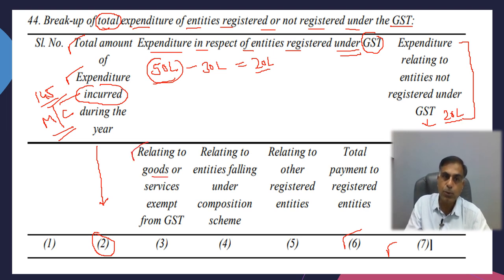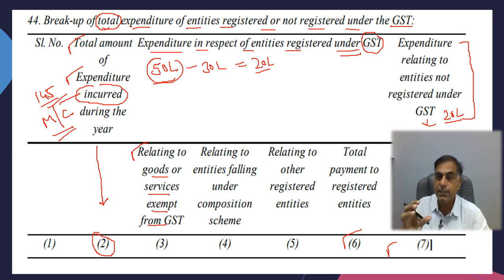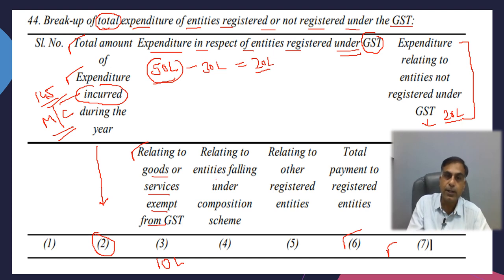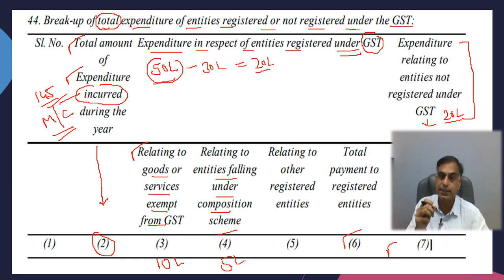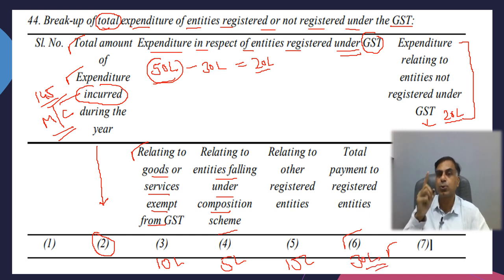The Column 6 bifurcation is: first, expenditure relating to goods or services exempt from GST — say for example Rs. 10 lakh procured from those having a GST number but supplying goods or services exempt from GST. Second, relating to entities under the composition scheme — say Rs. 5 lakh incurred on those having a composition scheme GST number. Third, the remaining Rs. 15 lakh incurred on entities having a regular GST number in the normal course. So this Rs. 30 lakh would appear under Column 6, that is total payment to registered entities.